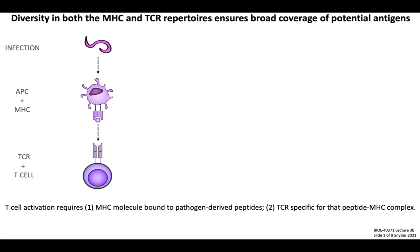When considering antigen presentation, we know that T-cell activation requires two main things. Number one is on the side of the antigen-presenting cell, which must assemble an MHC molecule bound to a peptide derived from a pathogen. Number two is on the T-cell side, which must express a T-cell receptor that can bind to that specific peptide MHC complex. Note that the TCR cannot bind to the peptide by itself — the TCR binds to the MHC molecule loaded with peptide, so the TCR binding specificity refers to the complex of peptide plus MHC.